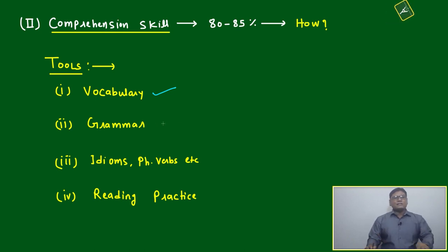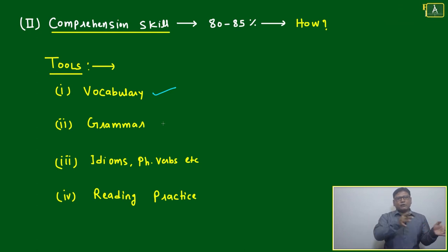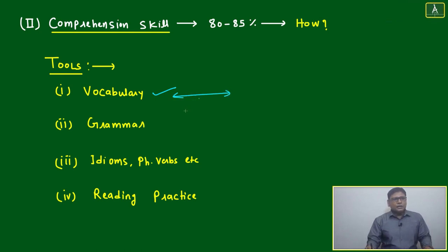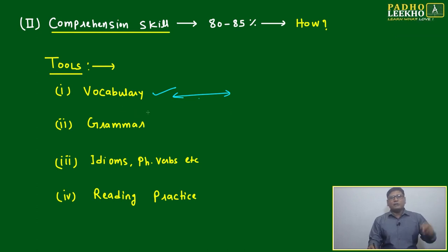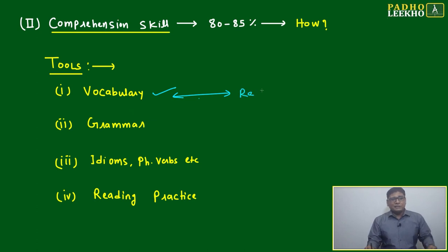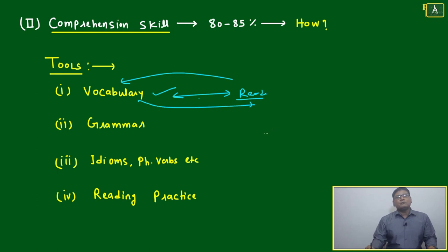It is a reversible process — if you have good vocabulary your understanding increases, and if you are a good reader your vocabulary increases. Both depend on each other. So we have to build vocabulary and start reading. Vocabulary will build up on the way, and through reading vocabulary will develop further.